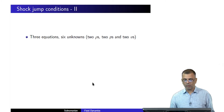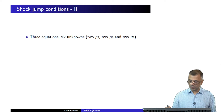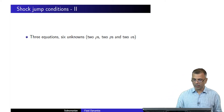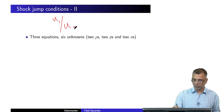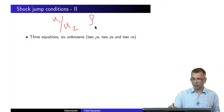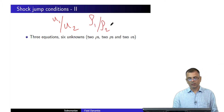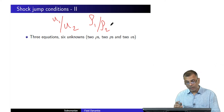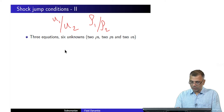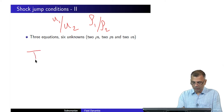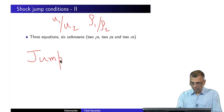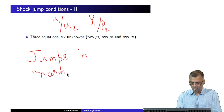We are now ready to start talking about quantities like u1 over u2 or rho1 over rho2 — these are the jumps. Remember, these refer to jumps in normal quantities, normal to the shock surface, not tangential.